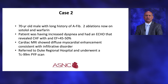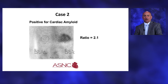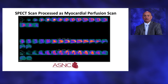The second case is a 70-year-old male with a long history of atrial fibrillation, two prior ablations, and increased dyspnea. An echocardiogram revealed congestive heart failure with an ejection fraction between 45 and 50%. Cardiac MRI showed diffuse myocardial enhancement consistent with an infiltrative disorder, and the patient was referred to Duke for a TEC-99M PYP scan. The scan was positive for ATTR cardiac amyloidosis with a ratio of 2.1. The SPECT, processed using myocardial perfusion reconstruction software, shows adequate PYP uptake throughout the myocardium.